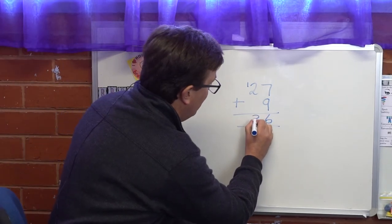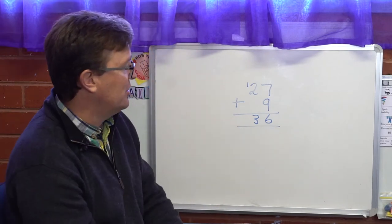So 2 plus 1 is 3. So 27 plus 9 equals 36.